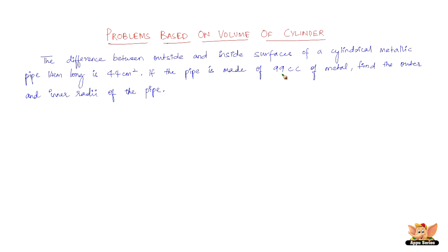If the pipe is made up of 99 cubic centimeters of metal — cubic means length into breadth into height — so this is the volume. That means 99 cm³ of material is used to make the pipe. We need to find the outer and the inner radii of the pipe.